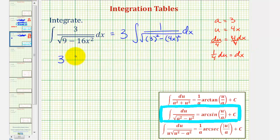We would have three times the integral of one divided by the square root of, let's write three squared as a squared, minus four x squared would be u squared, but dx equals one-fourth du, so we have du here, and we have an extra factor of one-fourth here. And now we can find the antiderivative.